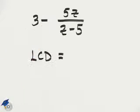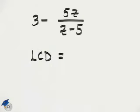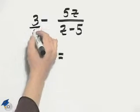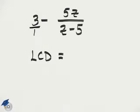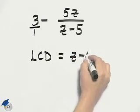The indicated operation in this problem is subtraction, so we have a fraction. We'll need to have a common denominator. You might recall that if a number is just a constant, you can write it over 1, so our least common denominator in this case is going to be z minus 5.